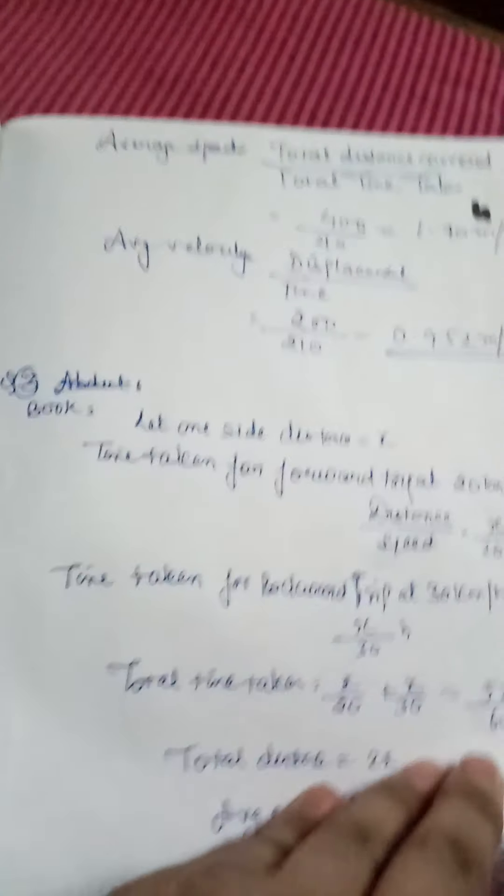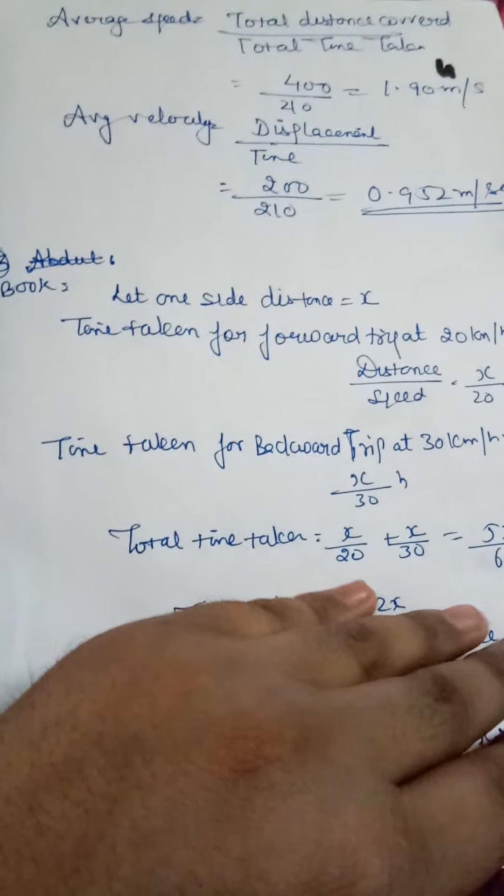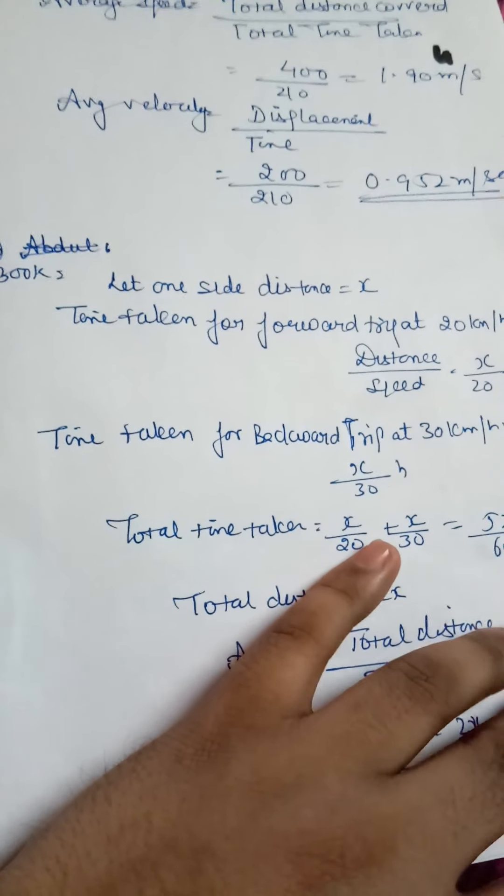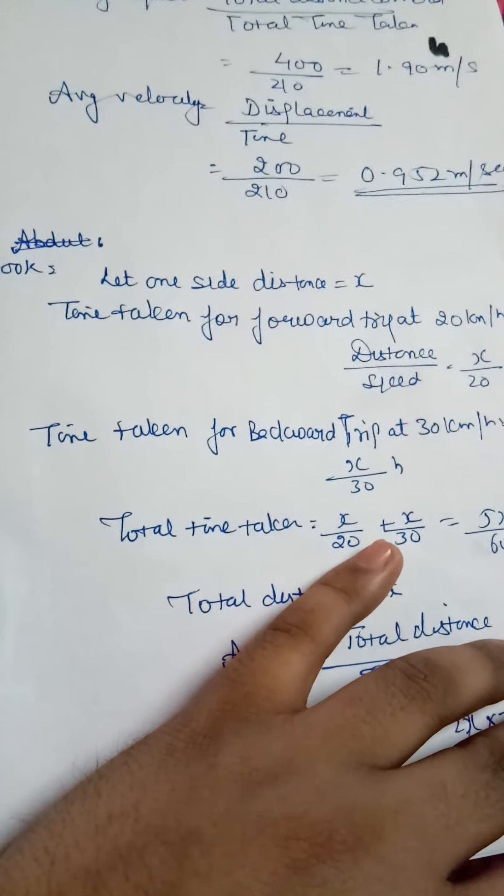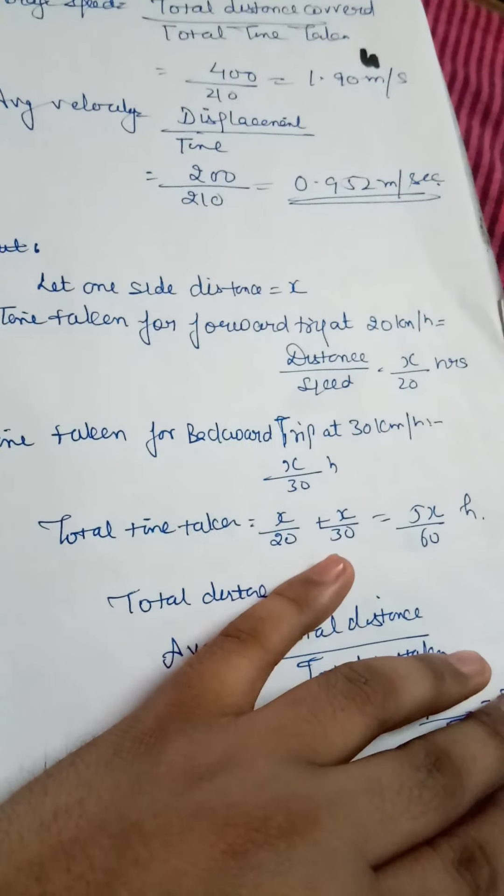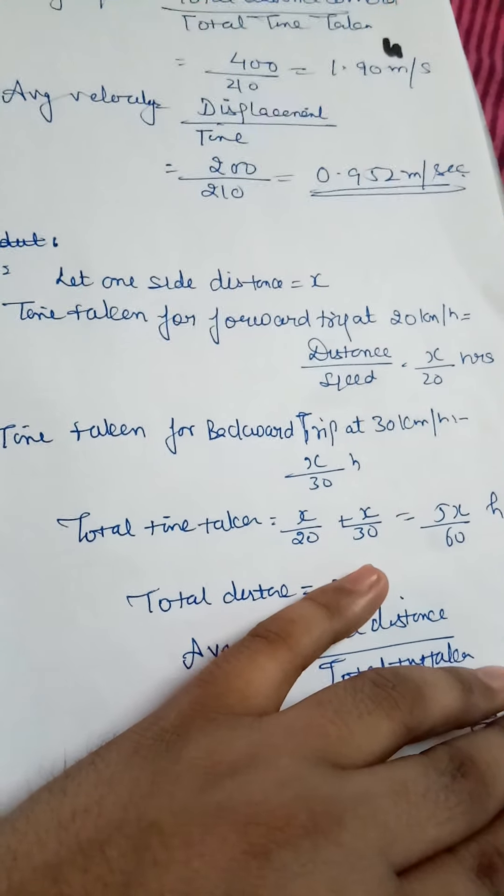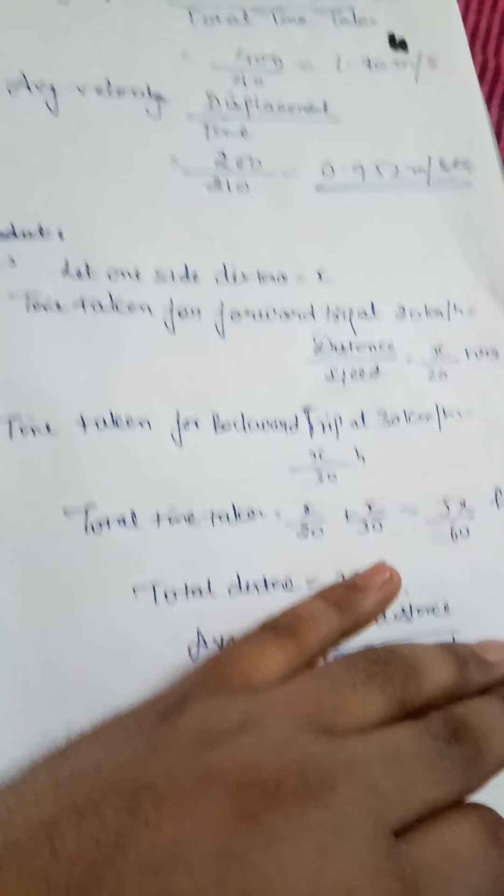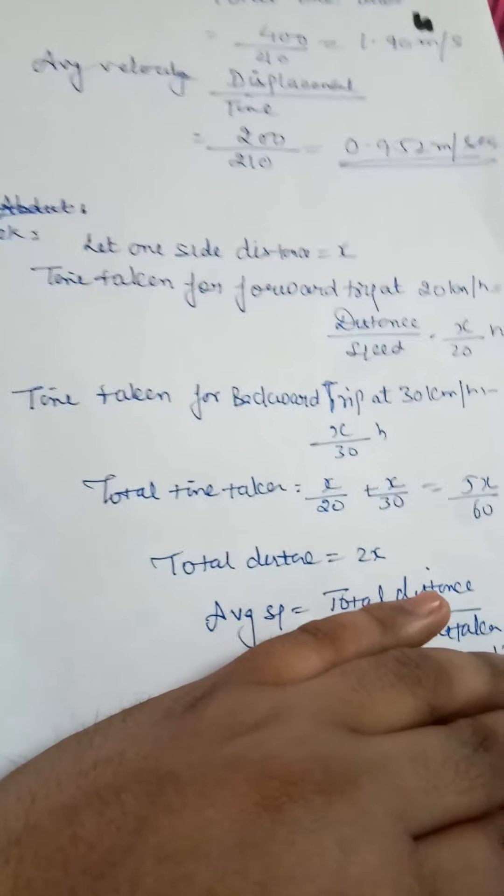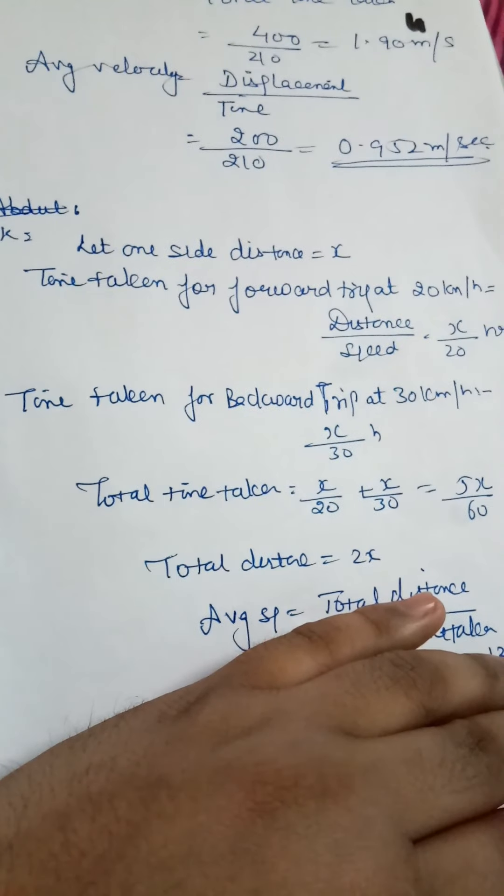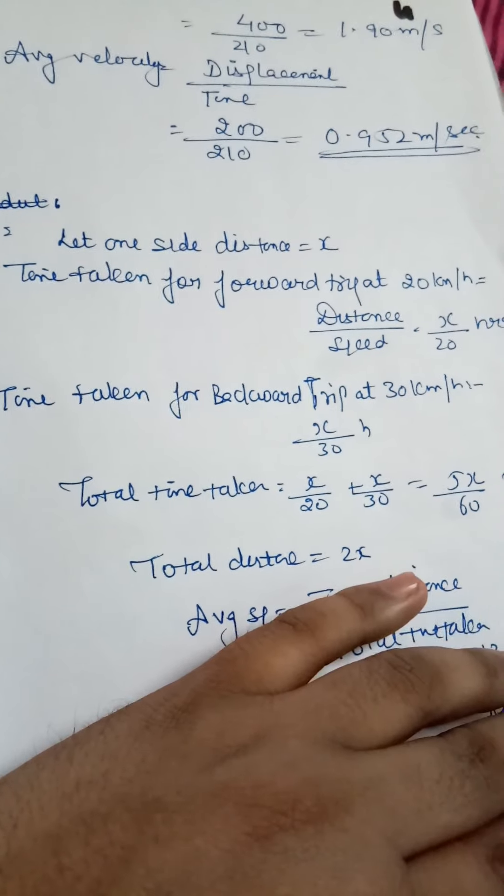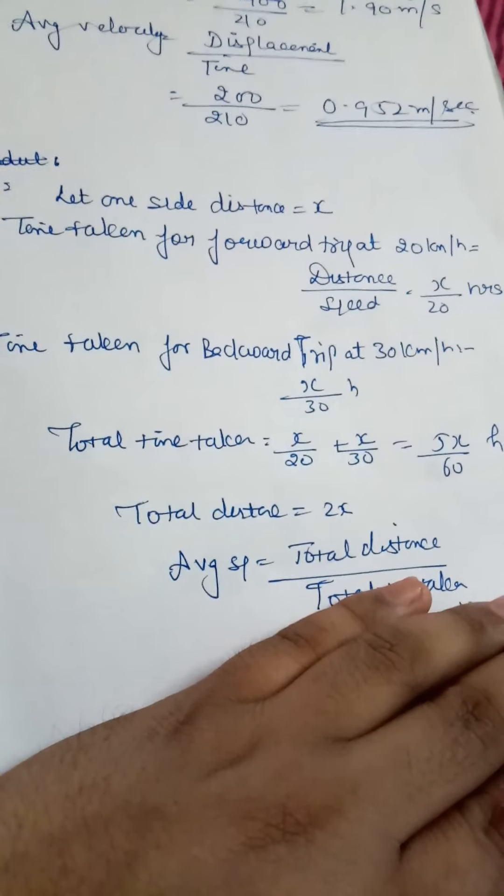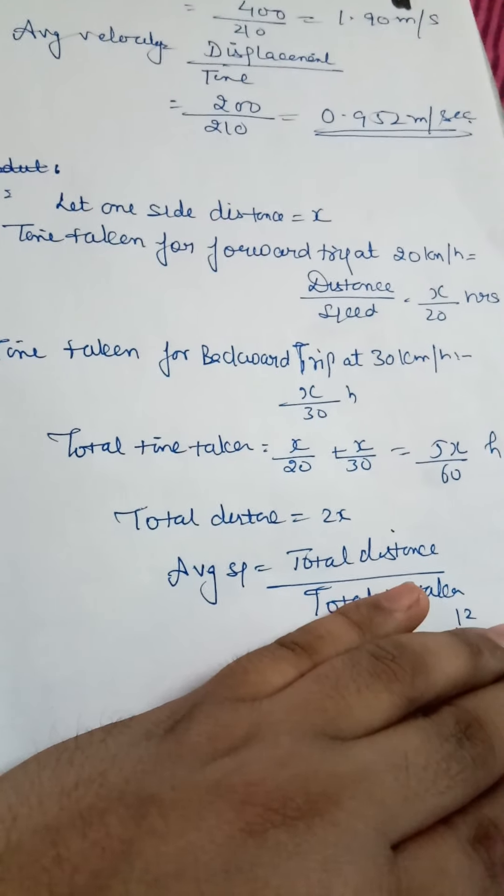Next question: a person travels to school covering the distance at 20 km per hour speed going forward and 30 km per hour speed returning. Using the formula: time taken equals distance upon speed. Time is equal to distance divided by speed.